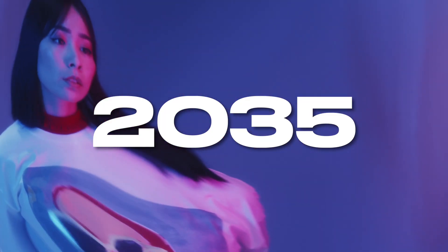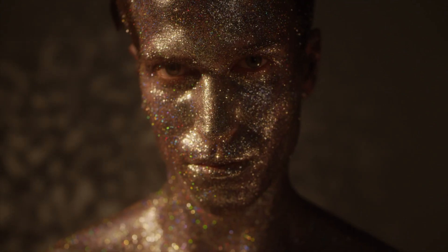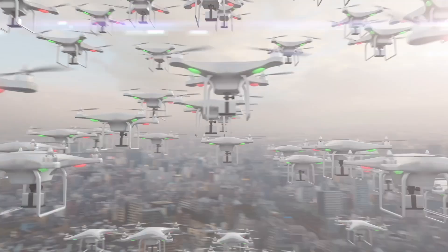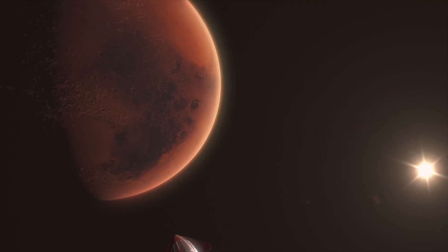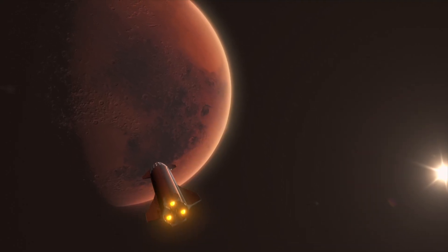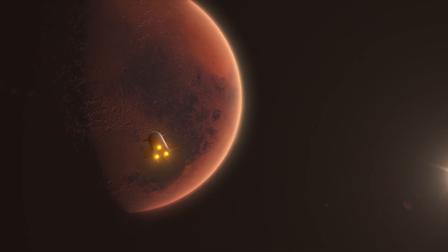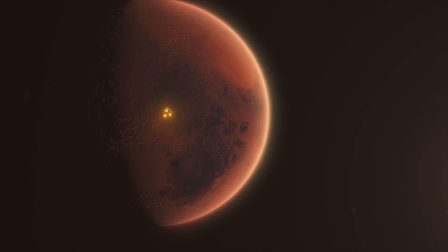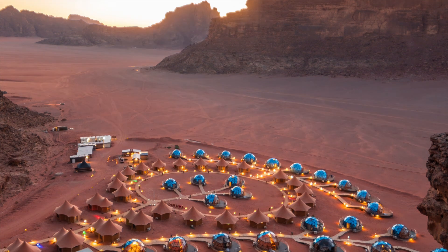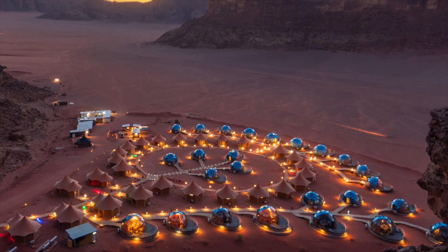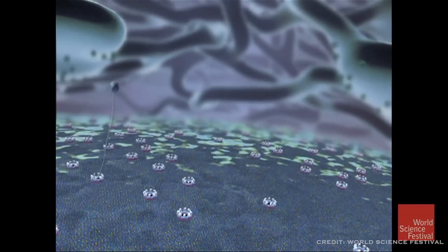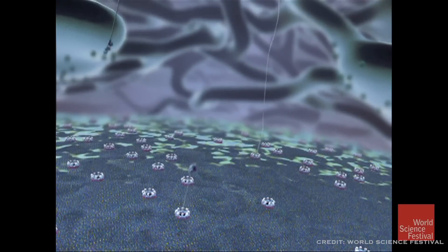The year is 2035. After years of development and smaller scale tests, humanity is about to witness a watershed moment in space exploration. A swarm of billions of nanobots, launched from Earth months earlier, has reached Mars orbit. Their mission? To construct the first permanent human habitat on another planet. As the world watches, the nanobots descend to the Martian surface. They begin to harvest the planet's regolith, breaking it down at the molecular level, and reassembling it into complex structures.